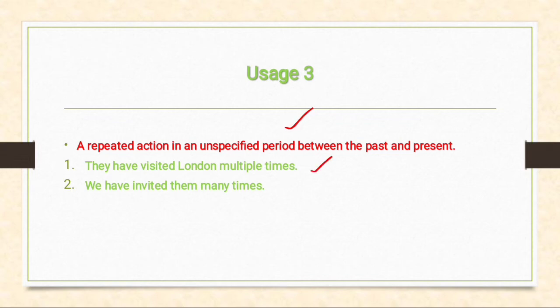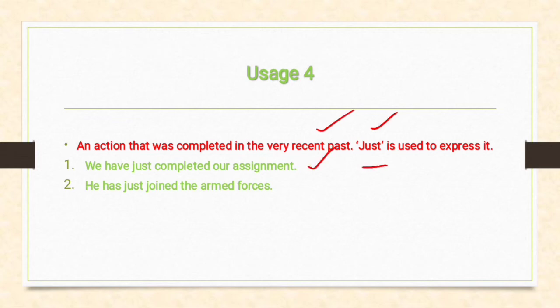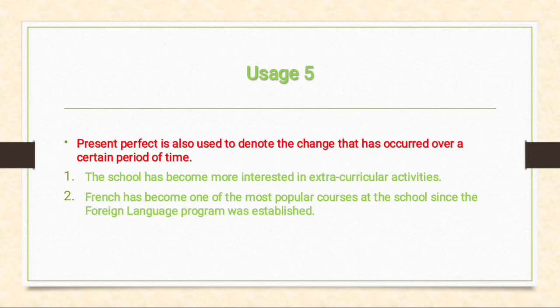Fourth usage: we use present perfect tense for actions completed in the very recent past, and here we use the word 'just'. 'Just' is used to express those actions — for example: 'We have just completed our assignment' means we completed this work in the recent past. 'He has just joined the armed forces.'